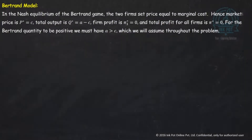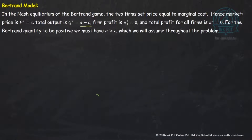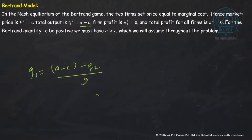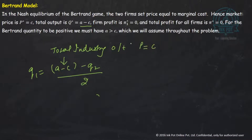Now let's go back briefly to the Bertrand model. In Bertrand, the two firms set price equal to marginal cost, which is why P star comes out to be C. So the total output of the two firms together under Bertrand is A minus C — that is the total output of the industry when price equals marginal cost or MC.